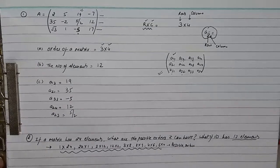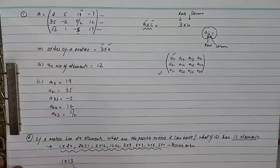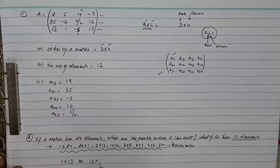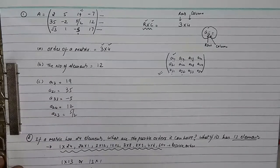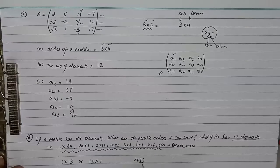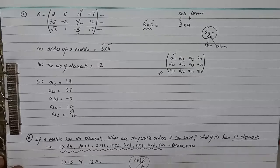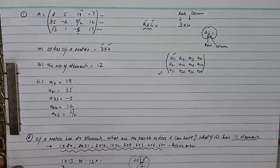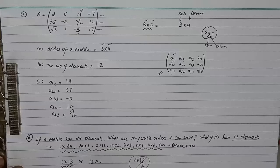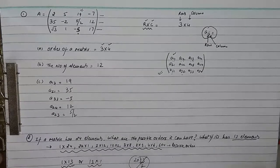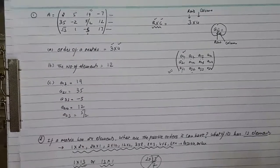Again, they want to know how 13 elements can be arranged. We can arrange them as 1 into 13 or 13 into 1. We cannot write it as 2 into 13 by 2 because that would not give whole-number elements. So the only possible orders are 1 into 13 or 13 into 1.